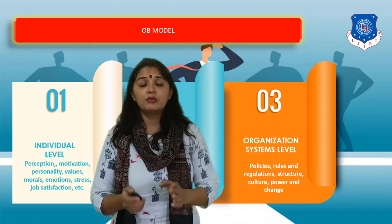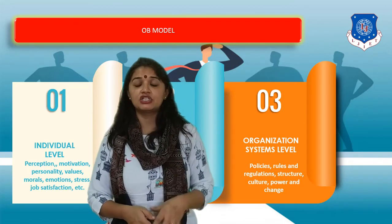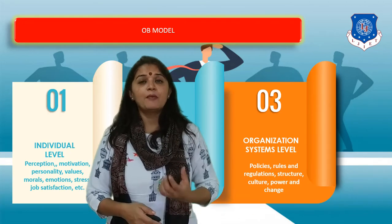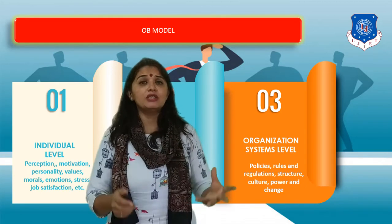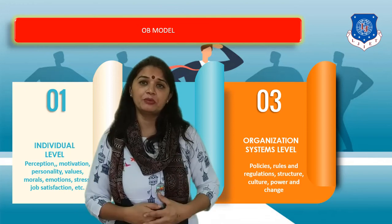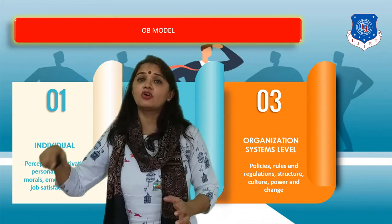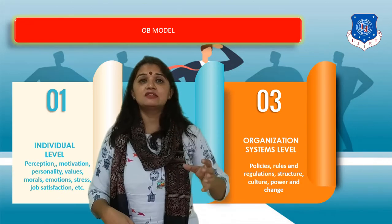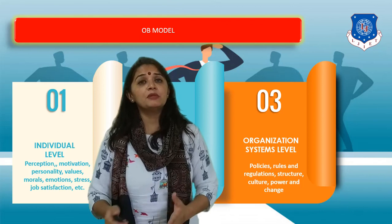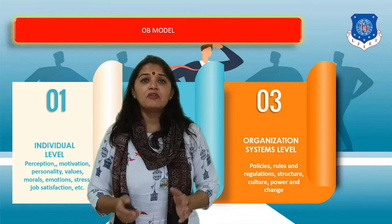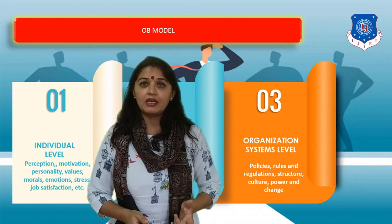The third level of study is the organization systems level. This level takes into consideration the first and second models — the individual and the group level — because after all, an organization itself is a group and the group consists of individuals. But the structure of an organization, its policies, rules, and regulations, also contributes to the behavior of a human being. That is why a human being's behavior will change given the organizational systems. How a human being tends to behave in a particular organizational system is what we will study in the third model — the organization systems model.